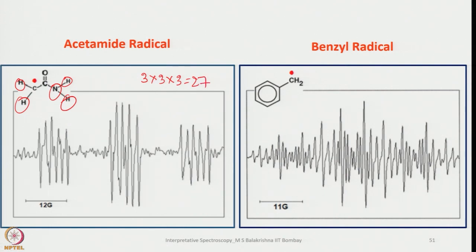For the benzyl radical, it first splits into a triplet (3 lines), and then we have 1, 2, 3, 4, 5, 6 — meaning 6 lines from the next coupling — giving 3×6 = 18 lines. We can predict how the EPR spectrum of benzyl radical would look.